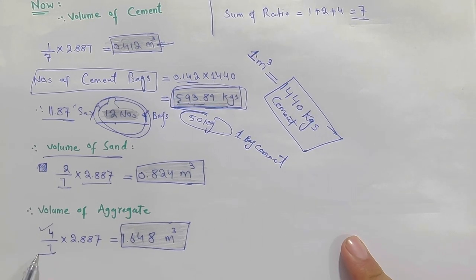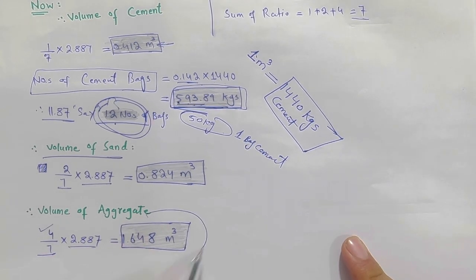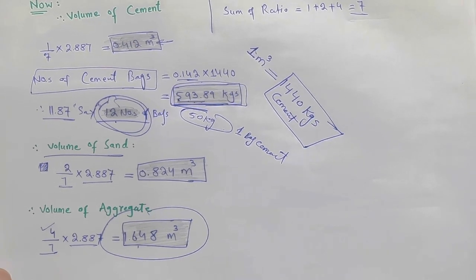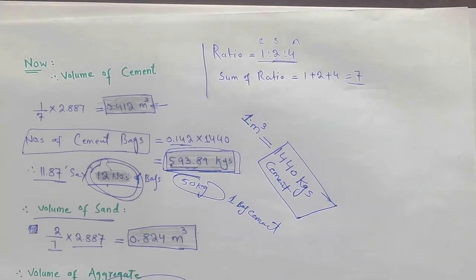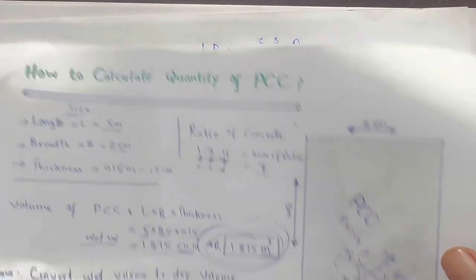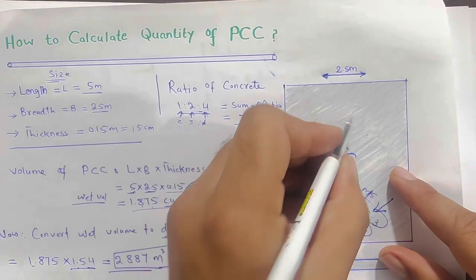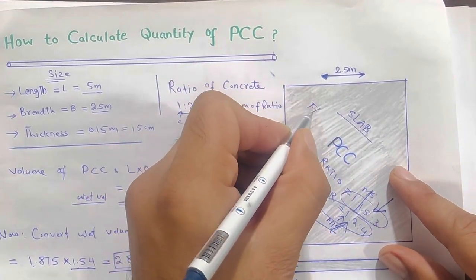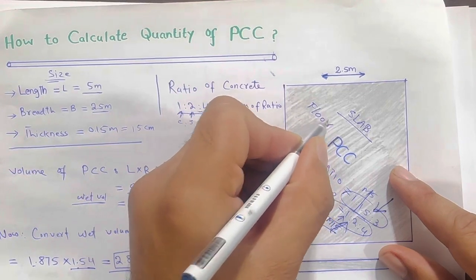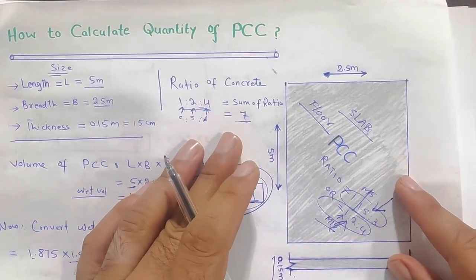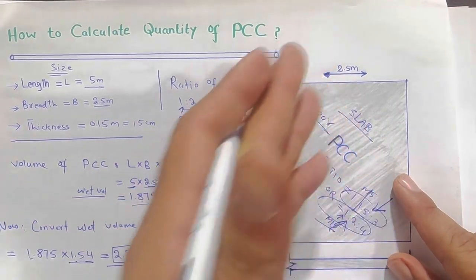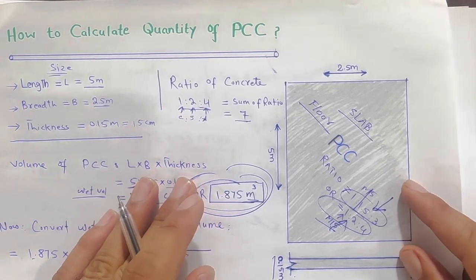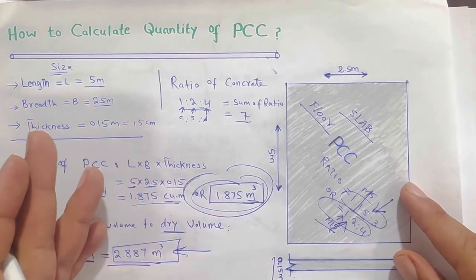For aggregate: 4 divided by 7, multiplied by the dry volume, gives you the volume of aggregate in cubic meter. So this is the topic for today - how to calculate the quantity of cement, sand, and aggregate for PCC. Suppose this is an RCC slab, a floor, or any sort of structure with a size of 2.5 meter - you can increase or decrease the size depending on the design.